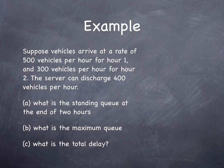We'll do an example. Suppose the vehicles arrive at a rate of 500 vehicles per hour for hour one and 300 vehicles per hour for hour two. The server can discharge 400 vehicles per hour. What is the standing queue at the end of two hours? What is the maximum queue? And what is the total delay?